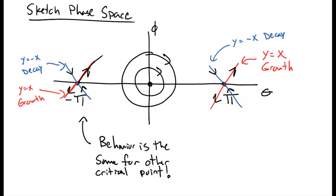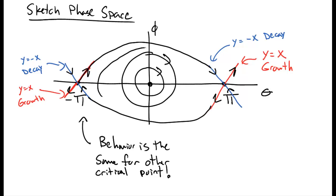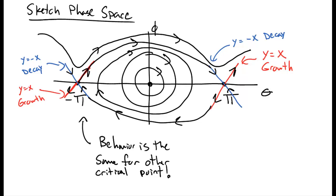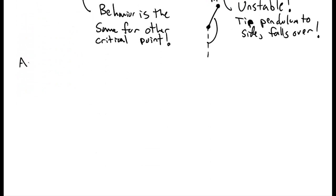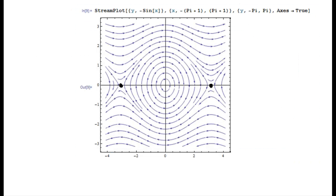Connecting these behaviors, we get interesting structures in phase space. If you're inside the separatrix curves, you keep oscillating around the center. If you're outside, you don't oscillate — you just keep going around. The points at theta equals pi or minus pi are unstable solutions, which makes sense: if you tip the pendulum just a little off vertical, it falls back down. The actual phase space plot shows saddle points at pi and minus pi with growing and decaying solutions, and oscillations about the center.